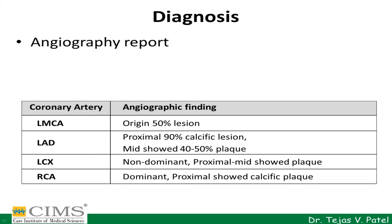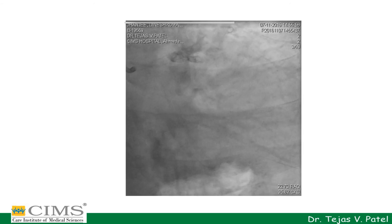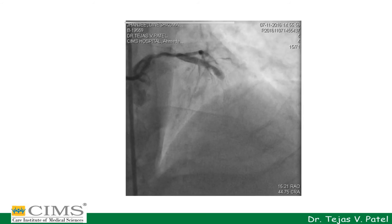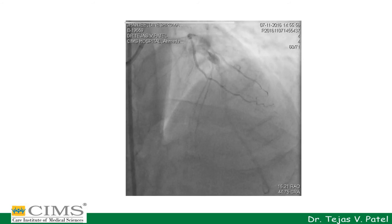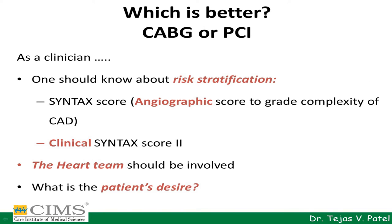Left anterior descending artery had approximately 90% calcific lesion followed by 40-50% intermediate plaque in the mid-zone. Circumflex artery and the right coronary artery showed non-significant calcific plaque. The angiography of the gentleman is showing significant left main disease with a severely calcific proximal LAD significant lesion. Based on the final diagnosis, he was recommended bypass surgery for revascularization or angioplasty with left main to LAD crossover stenting with rota ablation.